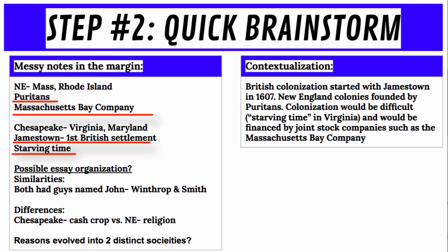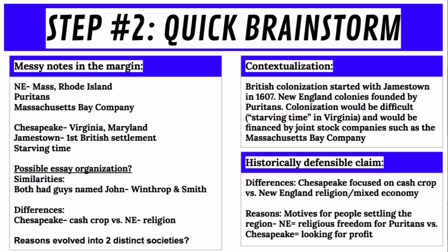Other parts of your brainstorm may help you provide a historically defensible claim about differences between the two regions and a possible reason for those differences. For instance, one region had cash crops like tobacco while the other was more religiously based with a mixed economy. The motives of those coming to the different regions also differ — New England colonists came for religious freedom, whereas the Chesapeake was largely based upon profits. All of this can start to take shape before you even look at the documents.